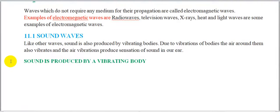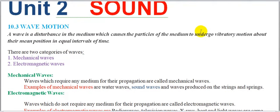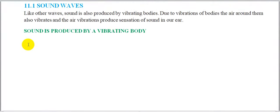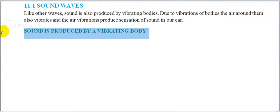First, we will read: sound is produced by a vibrating body. As we read in the basic definition of waves above, the particles of the medium perform vibratory motion. This means that whenever any object vibrates, its vibrations will generate sound around it. For example, if we take a piano, a flute, a guitar, a band, a table in front of us, or any chair — if we create vibrations on it, sound will be generated.